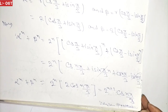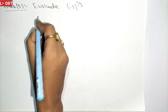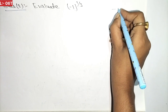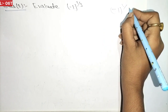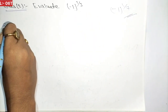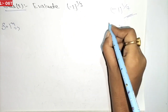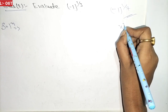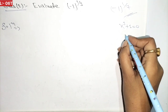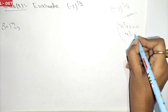Now we will see the next question — question number 2: evaluate minus 1 raised to the power 1/3 and minus 1 raised to the power 1/7. This is an important question. To solve it, we note that if x cubed equals minus 1, then x equals minus 1 raised to the power 1/3.